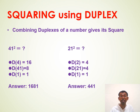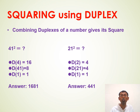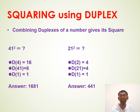Another example: 21². We have three duplexes — duplex of 2 is 4, duplex of 21 is 4, and duplex of 1 is 1. We combine them and get 4, 4, 1. There were no carries here, so it looks very easy — the answer is 441.